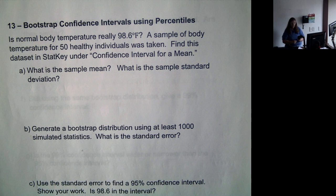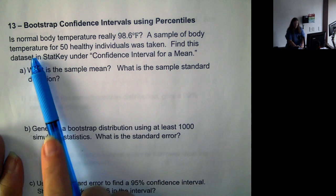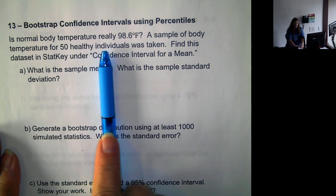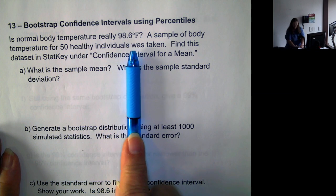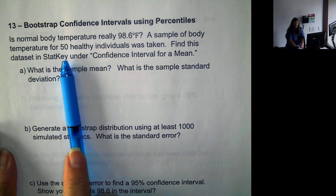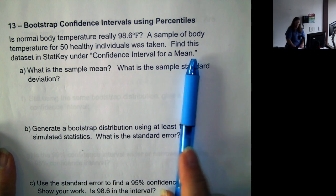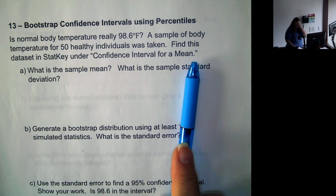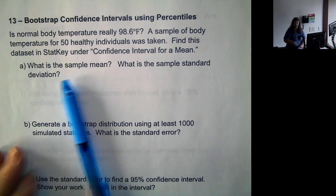Okay, we're going to continue working with bootstrap confidence intervals now using percentiles. And we want to see, is normal body temperature really 98.6 degrees Fahrenheit? A sample of body temperatures for 50 healthy individuals was taken, and we're going to look at StatKey to see the data set.